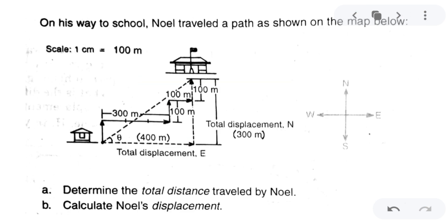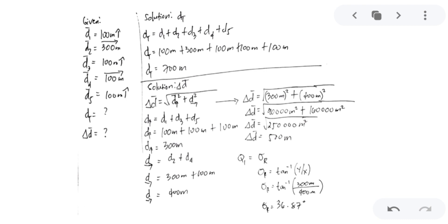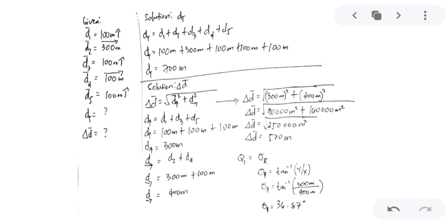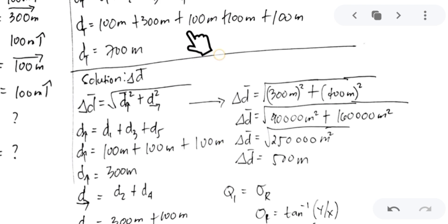The third displacement is going north, the fourth displacement is going east at 100 meters, and the fifth displacement is going north at 100 meters. To find the total distance, add all individual magnitudes disregarding direction: 100 + 300 + 100 + 100 + 100 = 700 meters.